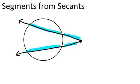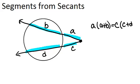So if I label the segments A, B, C, and D, the relationship is the length of A times the full length here of A plus B will be the same length as sort of the corresponding situation in the other secant line, that the length of C will equal the full length of C plus D.